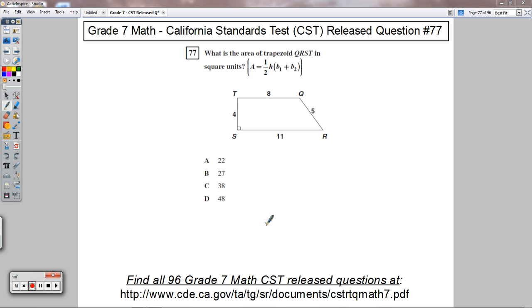Question 77 says, what is the area of trapezoid QRST in square units? And that is handy right there. They actually give us the formula.